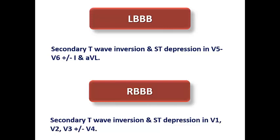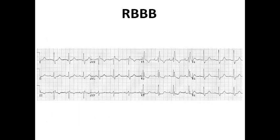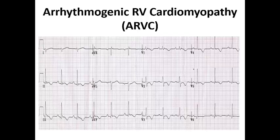In bundle branch blocks, the distribution is nearly the same as ventricular hypertrophy in the corresponding chamber. In left bundle branch block, secondary repolarization abnormalities occur in V5, V6, and sometimes I and AVL. In right bundle branch block, they occur in V1, V2, V3, sometimes V4. Here we see ST depression and T wave inversion in V5 and V6, indicating secondary repolarization abnormality with left bundle branch block. In right bundle branch block, ST depression and T wave inversion appear in V2 and V3, with T wave inversion in V1 without ST depression.